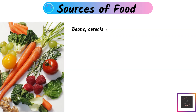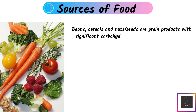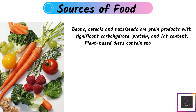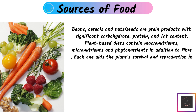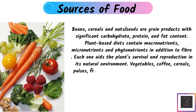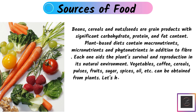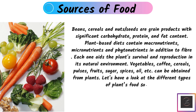Beans, cereals, nuts, and seeds are green products which contain significant carbohydrate, protein, and fat. Plant-based diets also contain micronutrients, macronutrients, and phytonutrients in addition to fiber. Vegetables, coffee, cereals, pulses, fruits, sugar, spices, and oils can all be obtained from plants. Let's have a look at the different types of plant food sources.